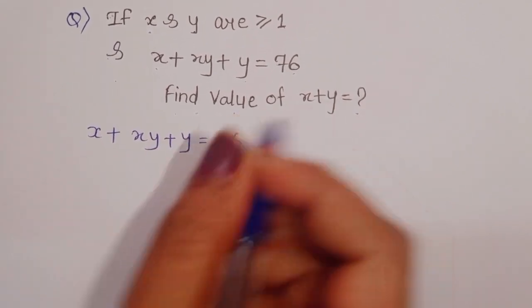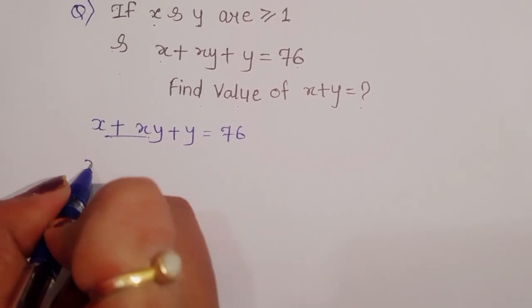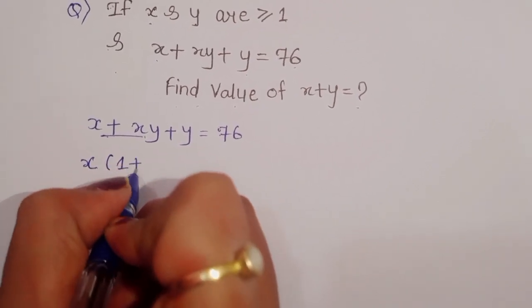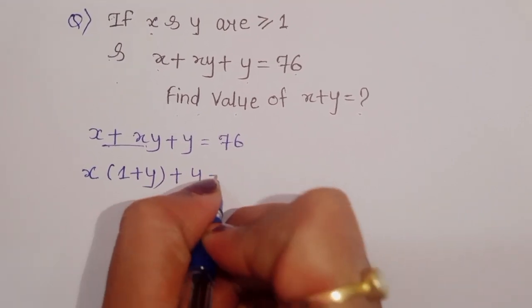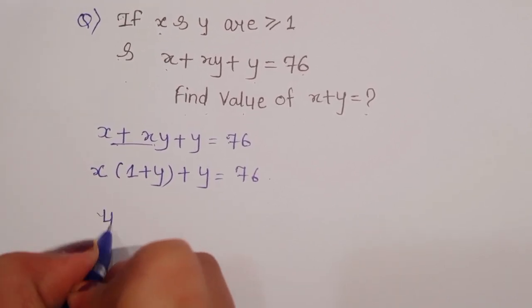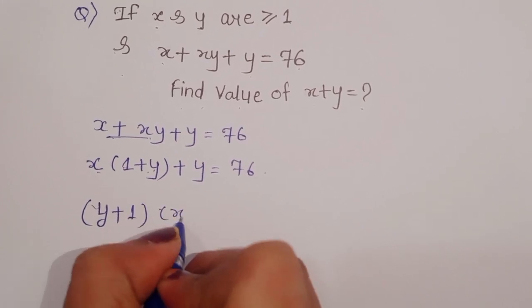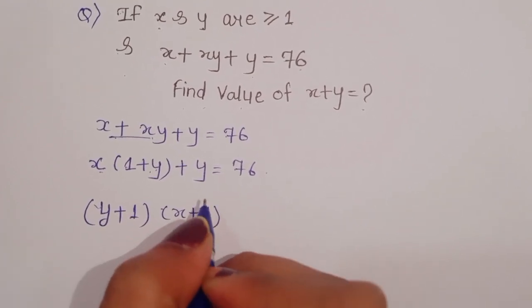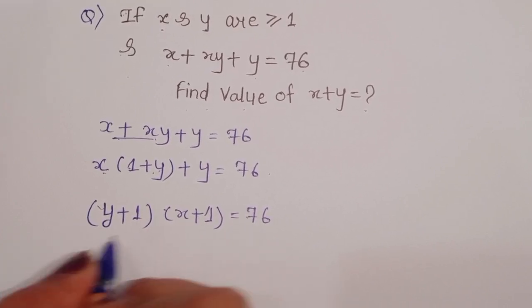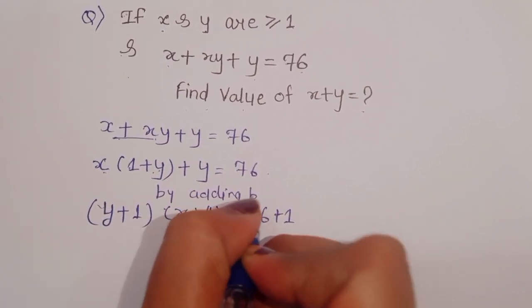What is given: x plus xy plus y is equal to 76. Now we can take x common, so it becomes x times (1 plus y) plus y is equal to 76. We can write this as y plus 1, and then x plus 1.